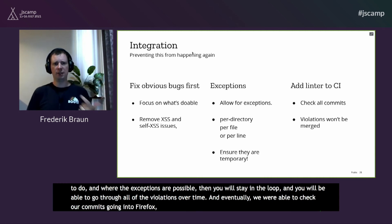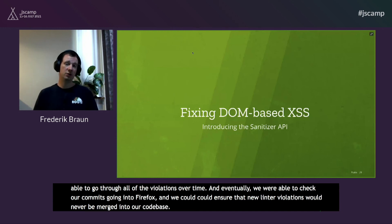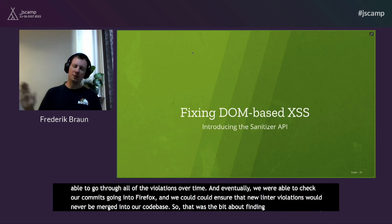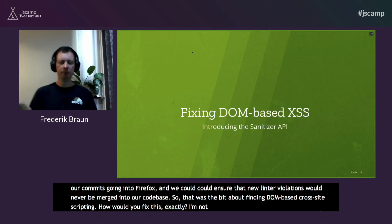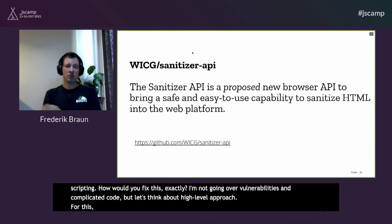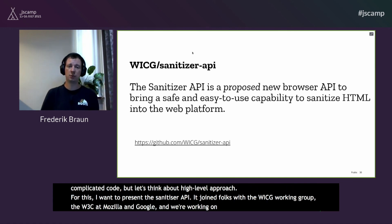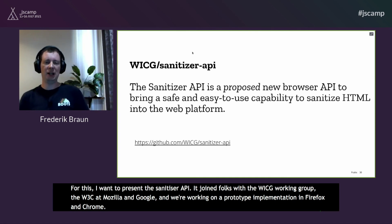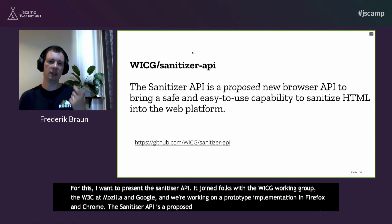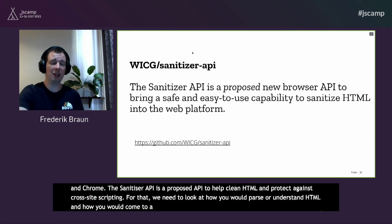That was the bit about finding DOM-based XSS. How do you fix it exactly? Let's think about a high-level approach. I want to present the Sanitizer API — joint work with folks in the WhatWG working group, the W3C, Mozilla, and Google. We're already working on a prototype implementation in Firefox and Chrome. The Sanitizer API is a proposed API to help clean HTML and protect against cross-site scripting, parsing or understanding HTML to produce a clean output from potentially malicious HTML fed into a function.